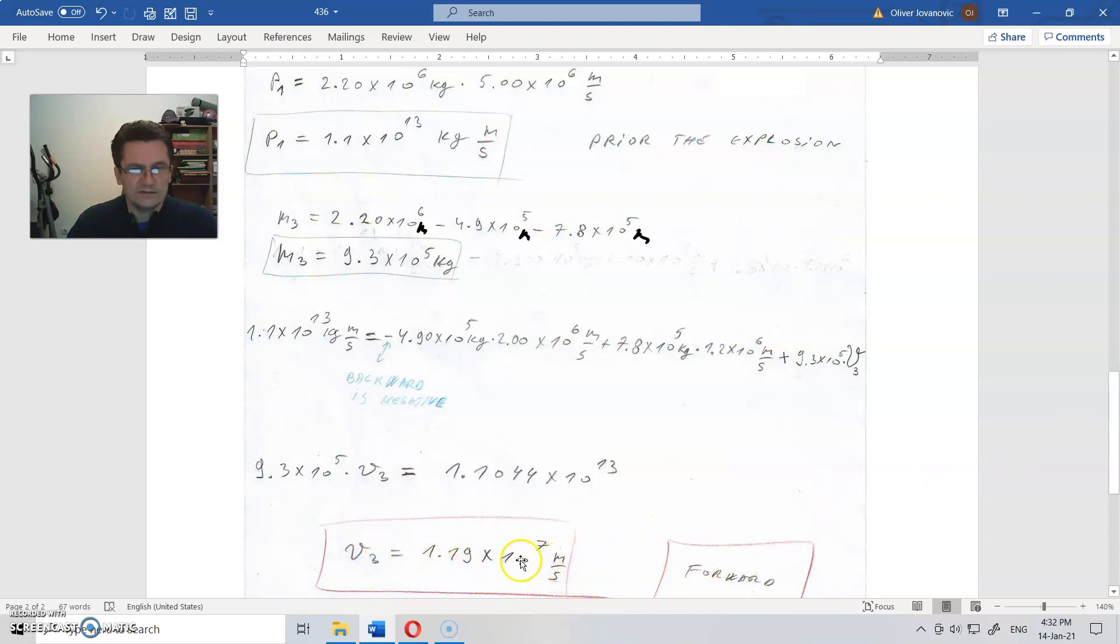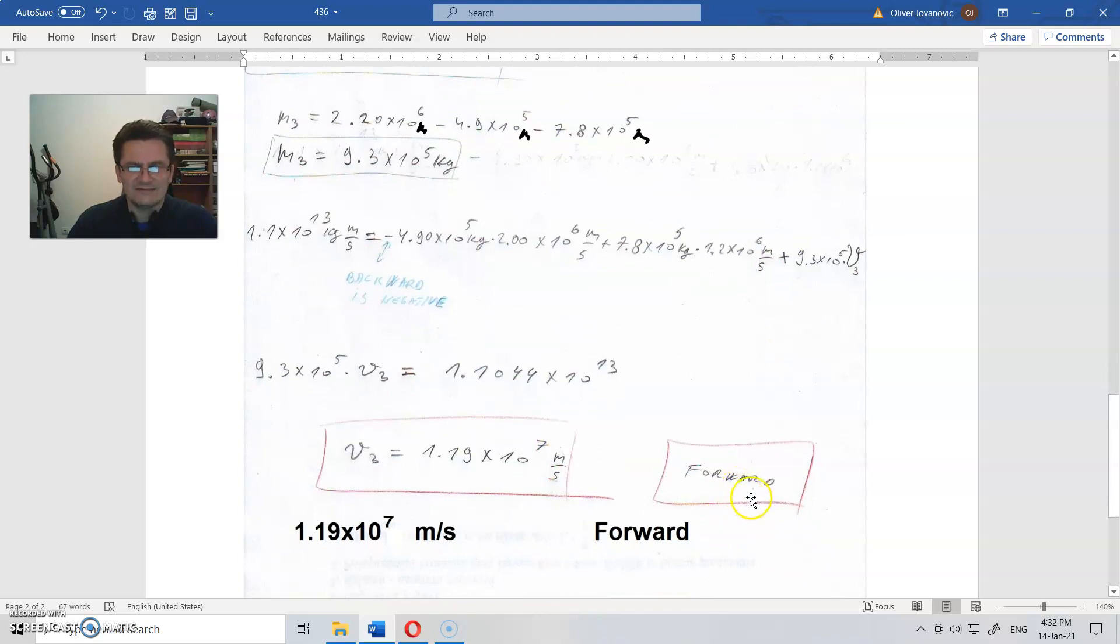And we know that is the speed, and we know that this is forward. Why is that? Because V is positive. If that would go backward, it would be a negative number here.